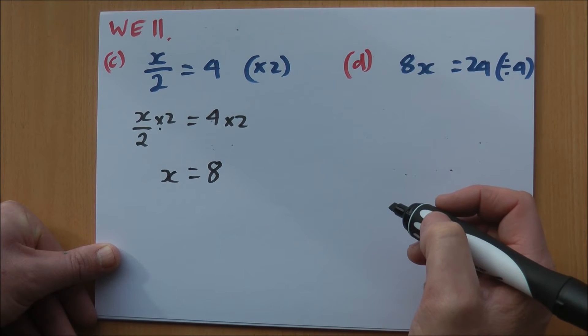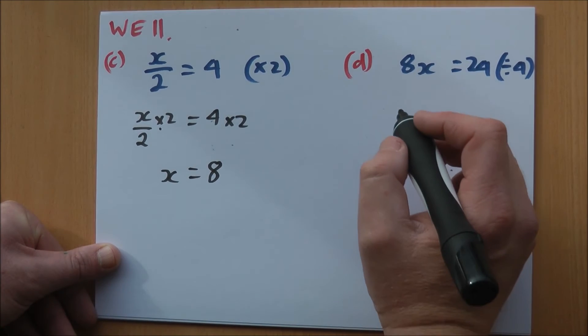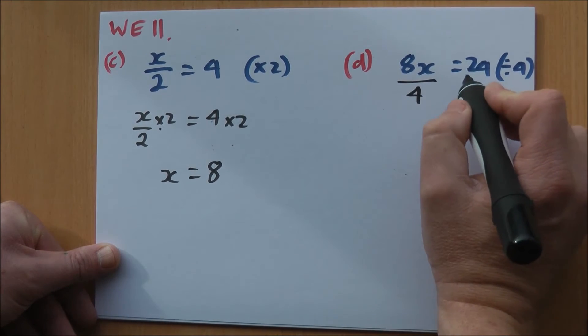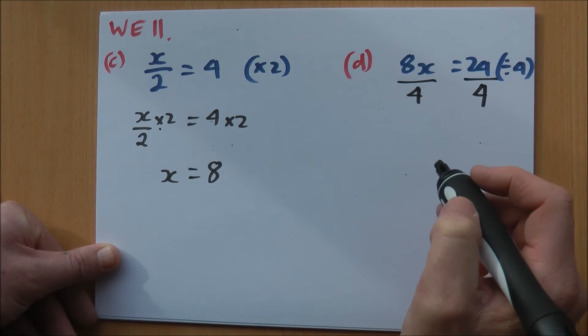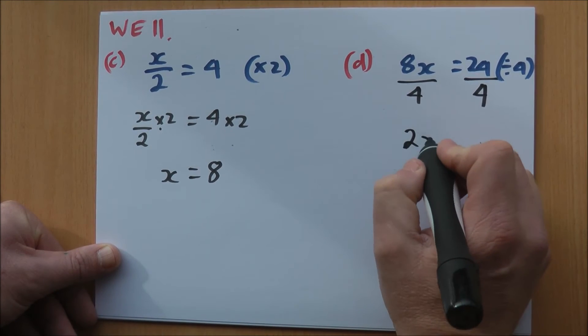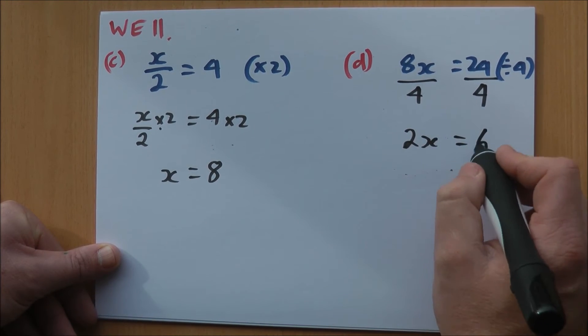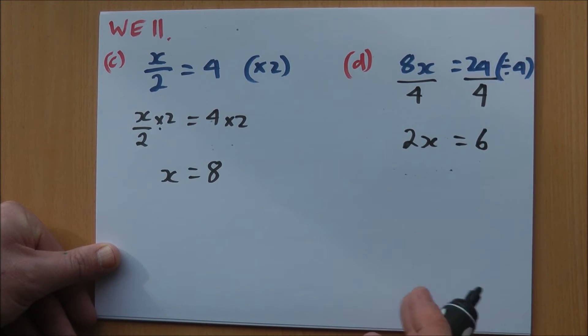Part D. 8x equals 24, and I'm going to divide by 4. So the easiest way to do that is just divide by 4, divide by 4. 8 divided by 4 is 2. 24 divided by 4 is 6. So 2x equals 6, and I'm done.